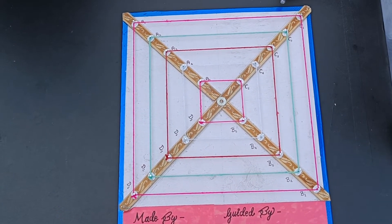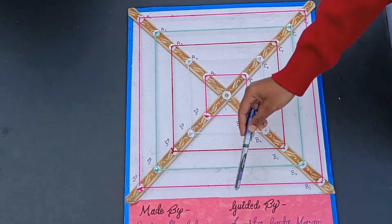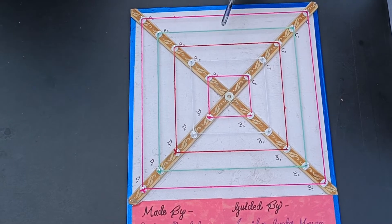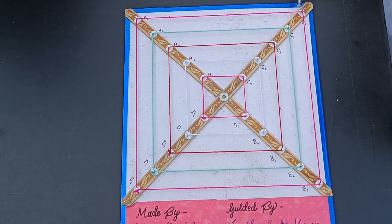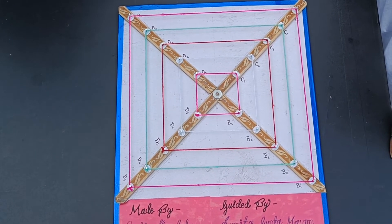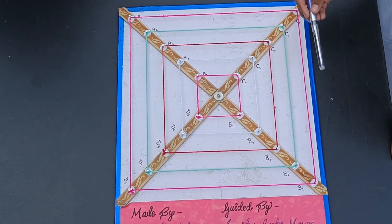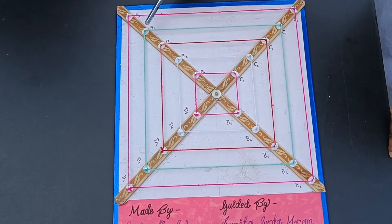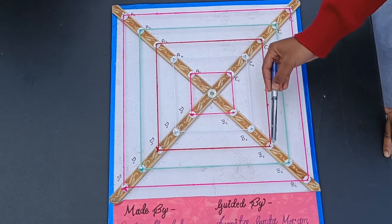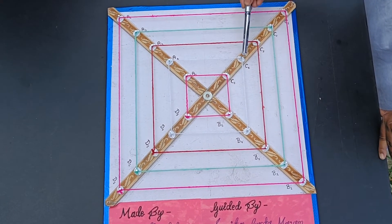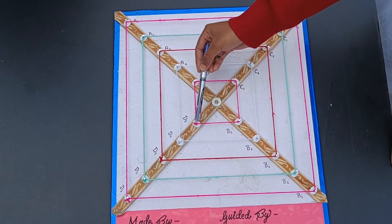Wind the thread around nails of subscript 1, such as A1, B1, C1, D1 on four ends of two strips to get a square. Similarly, wind the thread around nails of same subscript on respective strips to get squares with subscripts 2, 3, 4, and 5.